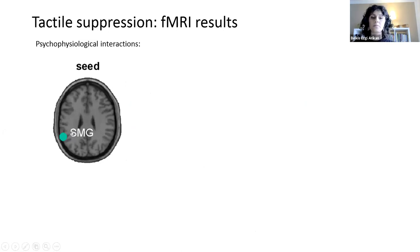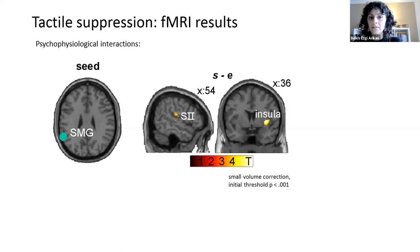Supramarginal gyrus has been shown as an area that is implicated in the integration of somatosensory signals. And we assessed functional coupling between this area and the S2, as well as the insula. So these are somatosensory processing areas.